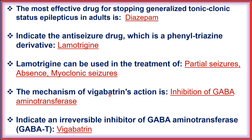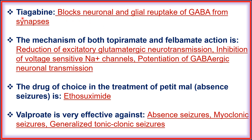The mechanism of vigabatrin action is inhibition of GABA aminotransferase (GABA-T). Vigabatrin is an irreversible inhibitor of GABA aminotransferase. Tiagabine blocks neuronal and glial reuptake of GABA from the synapse.